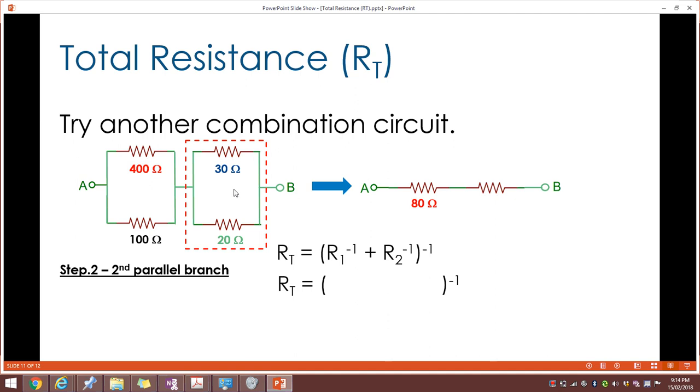Let's look at the second parallel branch. We have a 30 to the power of negative 1 plus a 20 to the power of negative 1, all to the power of negative 1, which is our equation for a parallel branch and clearly this is parallel. We do our sums and this ends up being a resistance of 12 ohms.